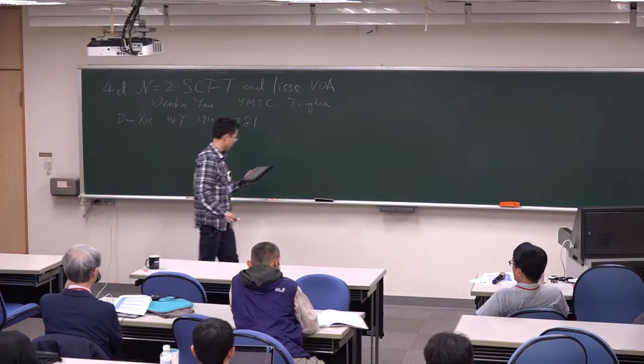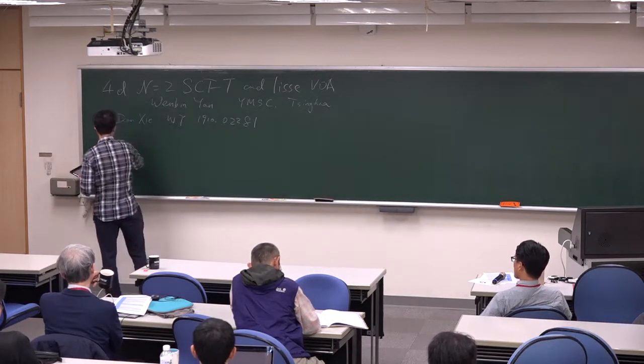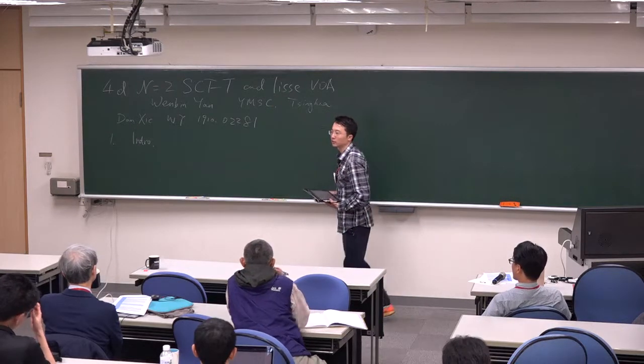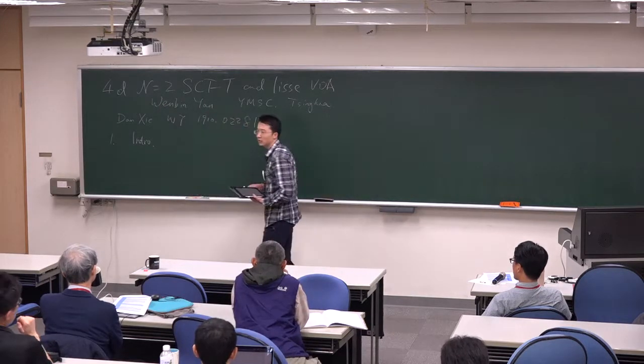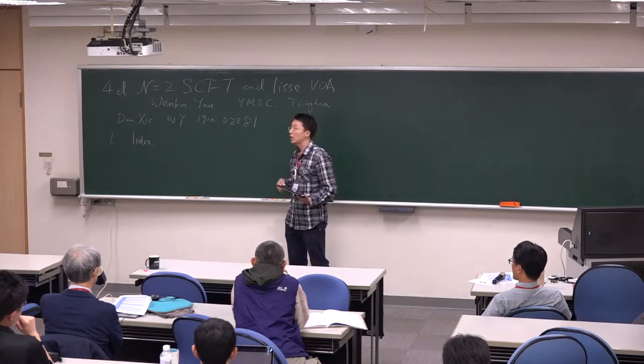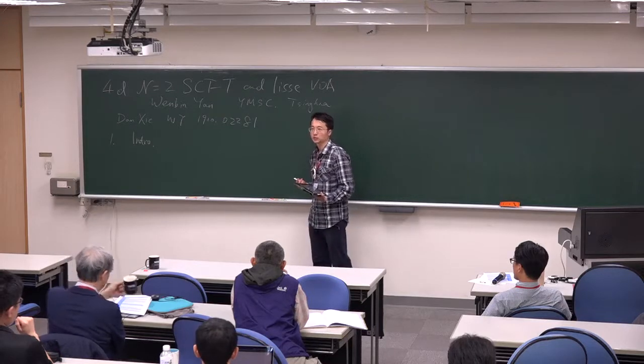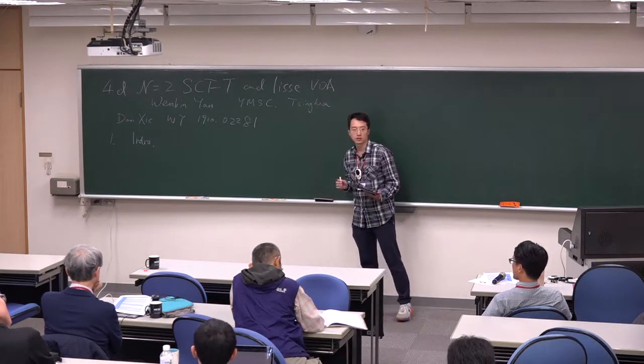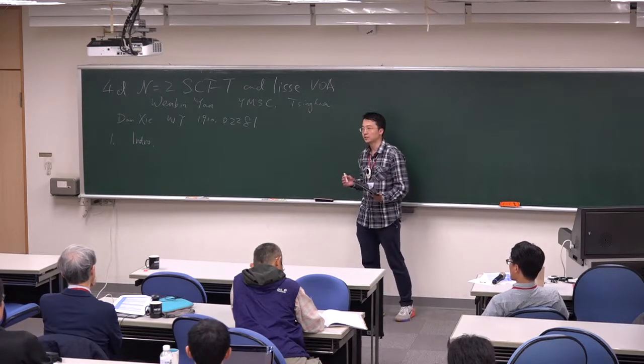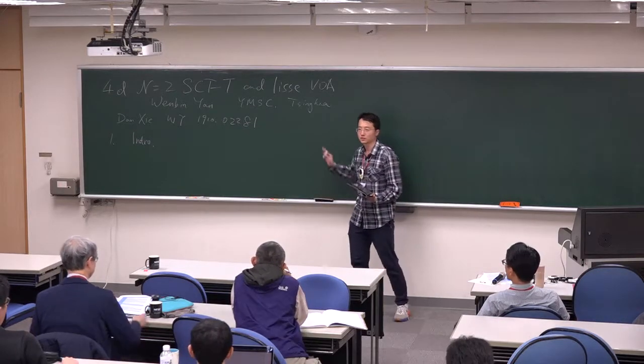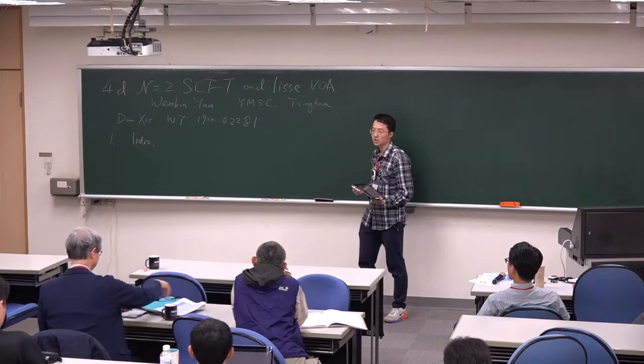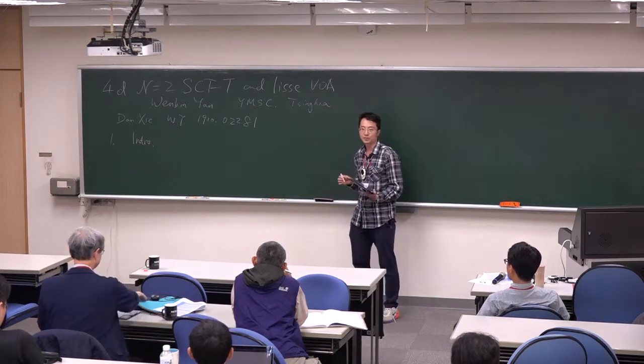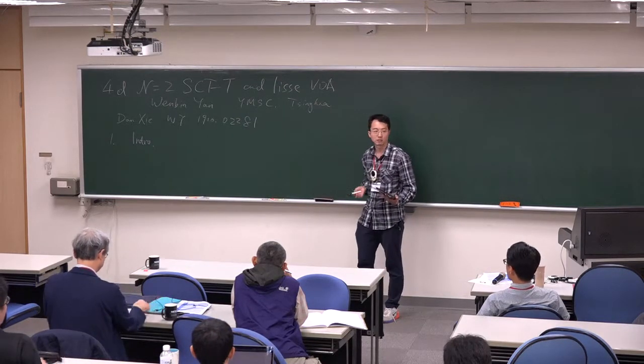Let me give you a brief introduction about what I'm going to talk about. My main objects are the two things in my title, which are one is 4D N equals 2 SCFT. SCFT denotes superconformal field theory, which are the 4D conformal field theory with two copies of supersymmetry. And the other part is the lisse vertex operator algebra, which is some particular vertex operator algebra.